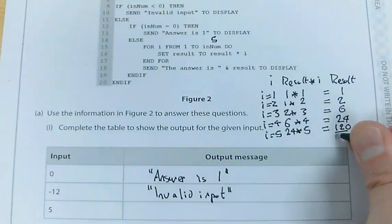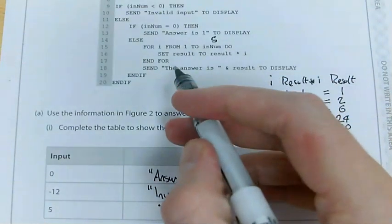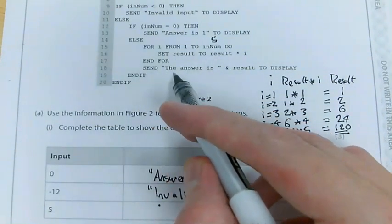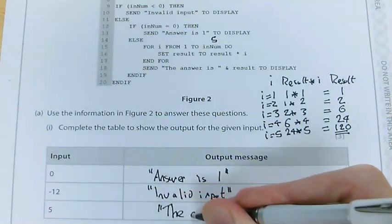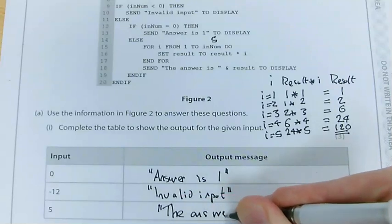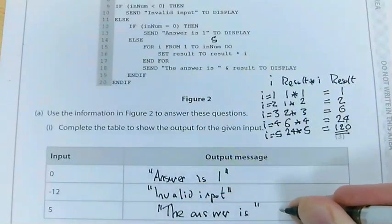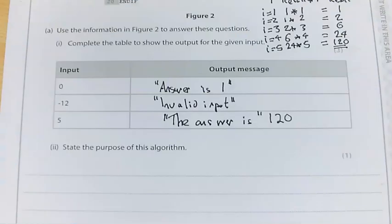Right. So what is my output now? It's that. So done that. 1 to 5. Send the answer is. So I'd write that down properly. The answer is. And result. 120. To display.